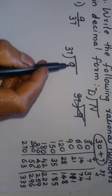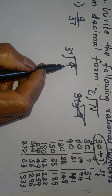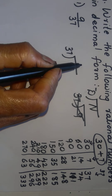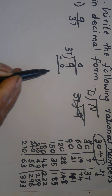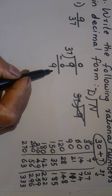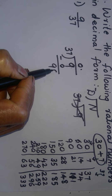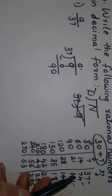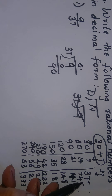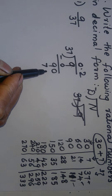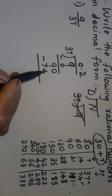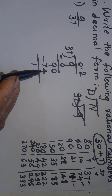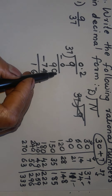First, 37 is much bigger than 9, so it goes zero times. We put 0, then since 9 remains and we have nothing more to bring down, we place a decimal point and add a zero, making 90. 90 divided by 37 — 37 goes 2 times (2×37=74). Subtracting 74 from 90 gives 16.